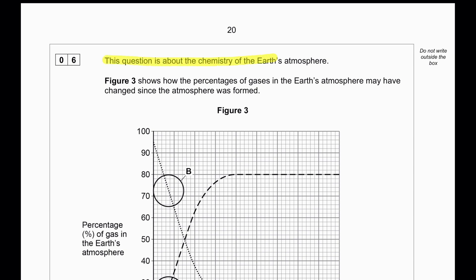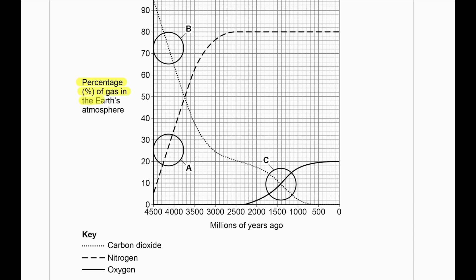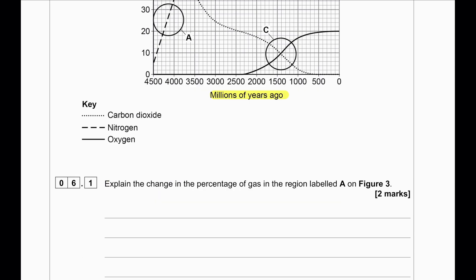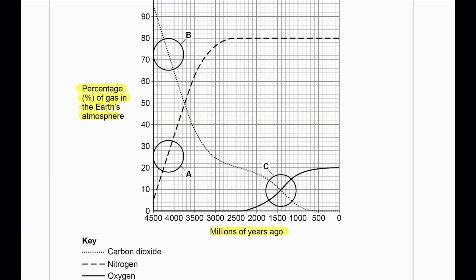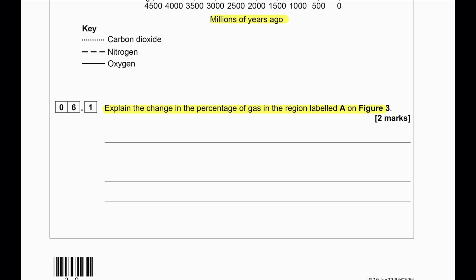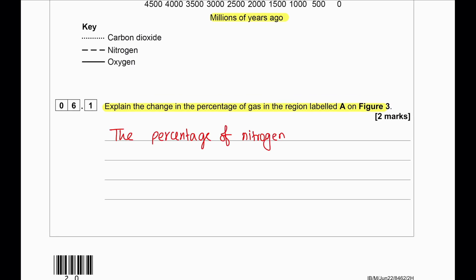This question is about the chemistry of the earth's atmosphere. Figure 3 shows how the percentages of gases in the earth's atmosphere may have changed since the atmosphere was formed. The y-axis shows percentages of gases and the x-axis shows millions of years passed until today. In region labeled A, the concentration of nitrogen is increasing.